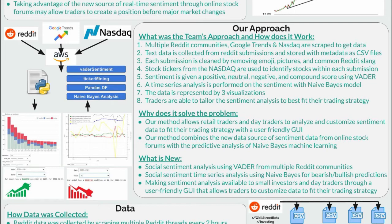Next, a time series of the data is developed and a bearish or bullish prediction is made for each stock using a naive Bayes analysis. Lastly, the data can be visualized and filtered through multiple visualizations seen in the lower left: a bar chart that shows the sentiment score for each stock, a line chart that shows the time series for each stock's price and sentiment, and a visual output of the naive Bayes prediction.